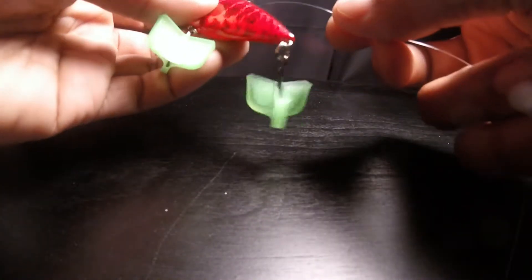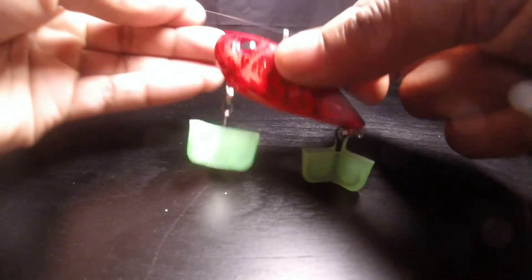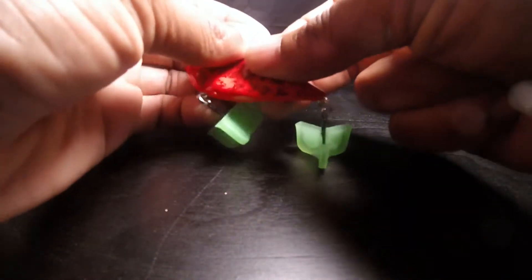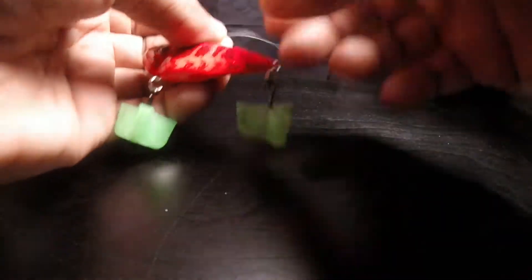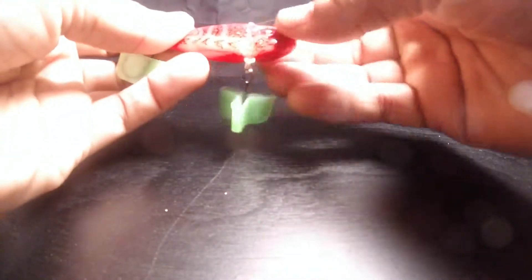What you want to do is go through your eyelet, plenty of slack, like so. Turn it around, whatever choice you like, whatever side.